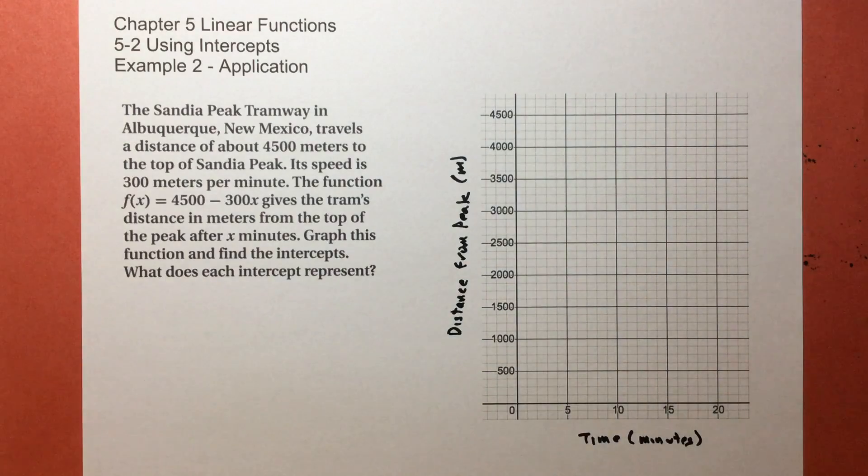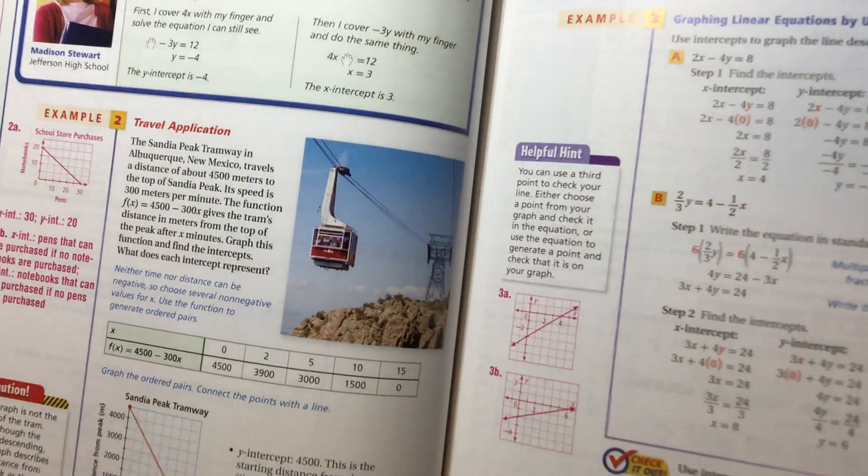Okay, so we've got the Sandia Peak Tramway in Albuquerque, New Mexico. I got a picture of it in the book, right there. See the picture?